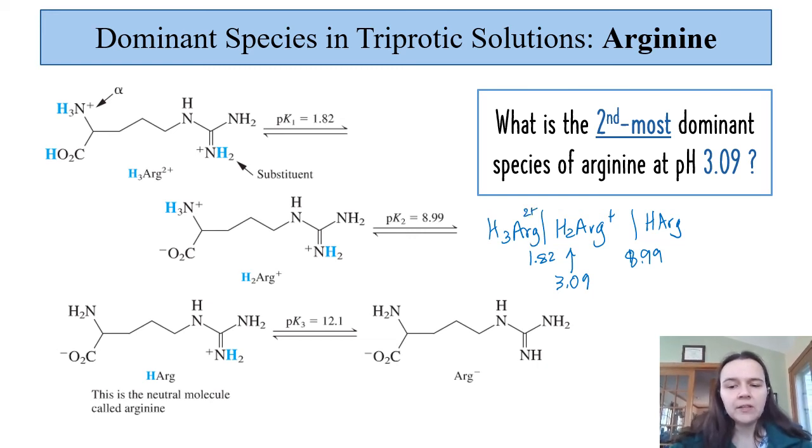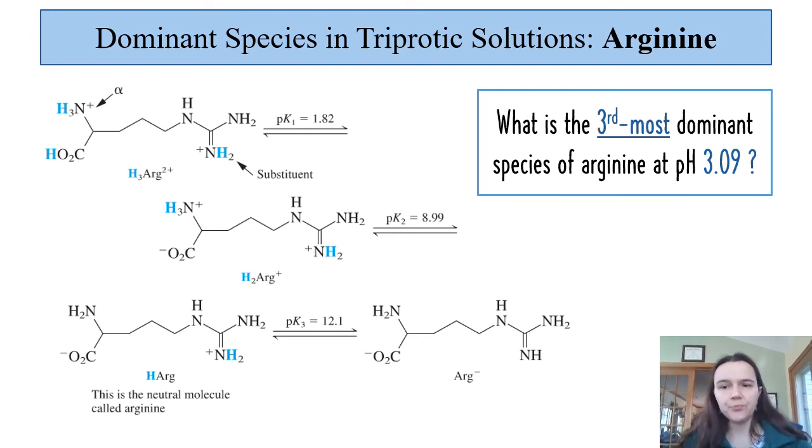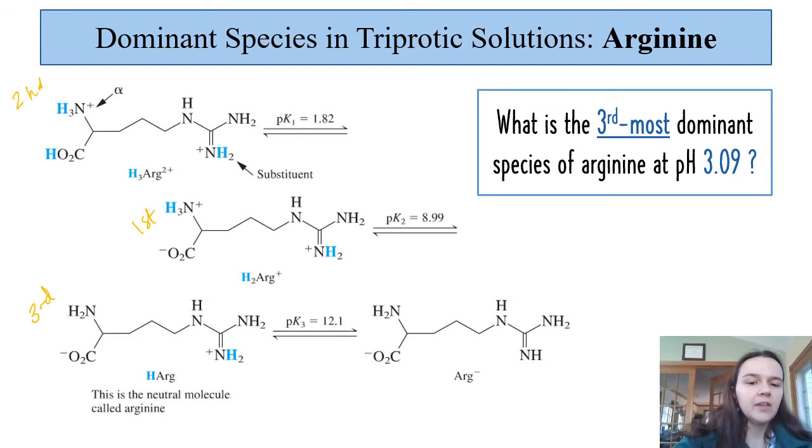So ultimately first most dominant is H2arg+, and second most dominant is H3arg 2+. You could then ask what's the third most dominant and in that case it would be H1arg.